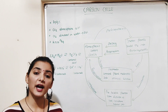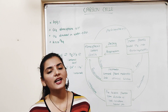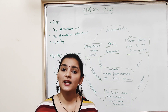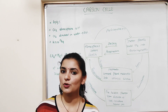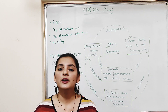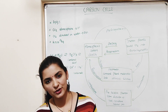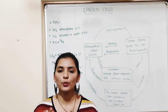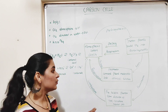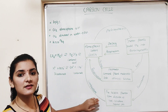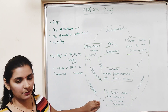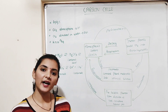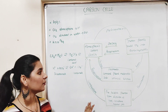Human activities also have a great influence on the carbon cycle. Activities like transport, deforestation, and burning of fossil fuels for energy produce large quantities of carbon dioxide, which add to the natural carbon cycle. These are the different natural and human-influenced pathways of the carbon cycle.